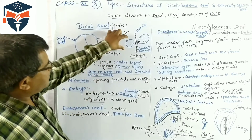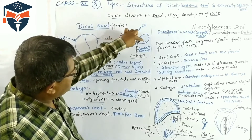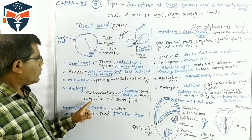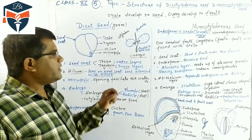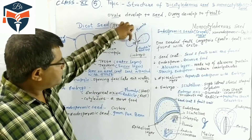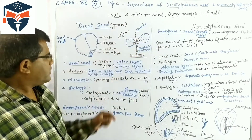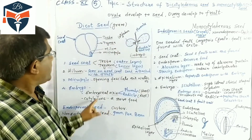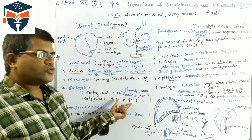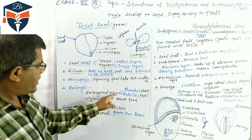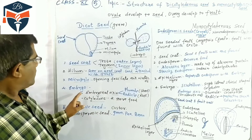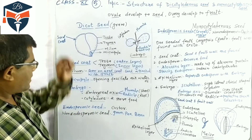Another part is the cotyledon. These are flattened structures that store food. When green, the cotyledons can synthesize food by photosynthesis. Dicotyledonous seeds have two cotyledons, and their function is to store food. So the embryo of the dicot seed has two parts: the embryonal axis and the cotyledons.